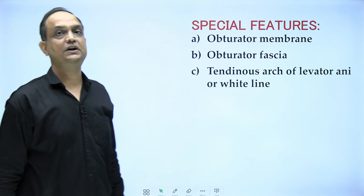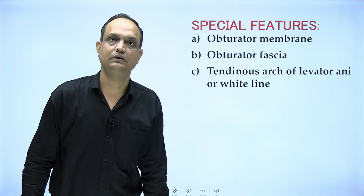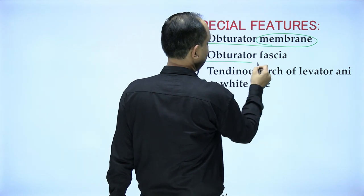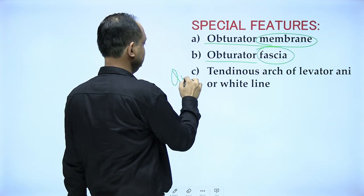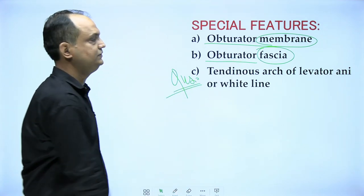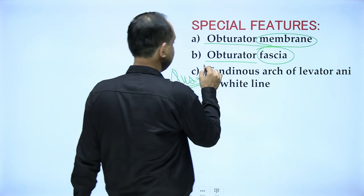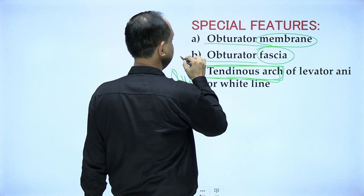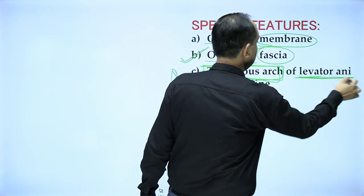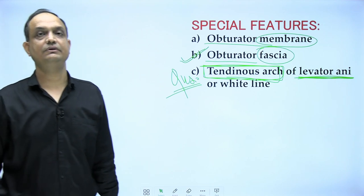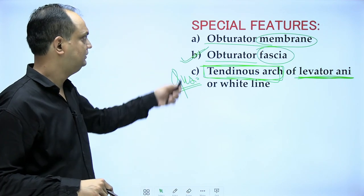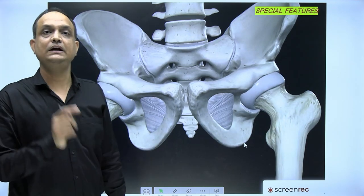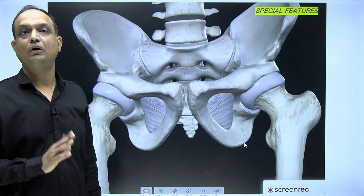Regarding special features of this muscle and topic: first is the obturator membrane, second is the obturator fascia, and third — very importantly — on the inner side of the obturator fascia there is a special feature known as the tendinous arch. This tendinous arch, a feature of the obturator fascia, provides origin to an important muscle of the pelvic diaphragm known as levator ani.